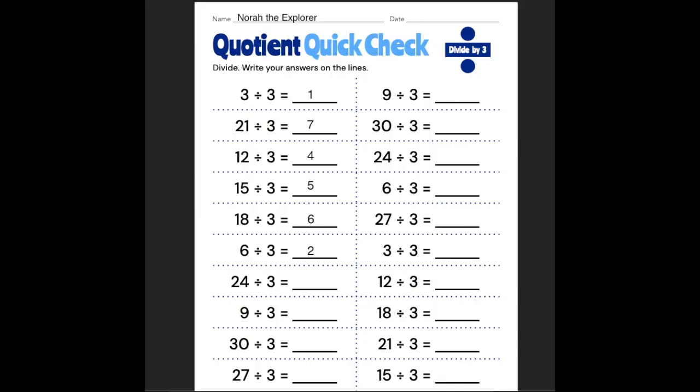6 divided by 3 is 2. 24 divided by 3 is 8. 9 divided by 3 is 3. And 30 divided by 3 is 10. 27 divided by 3 is 9.